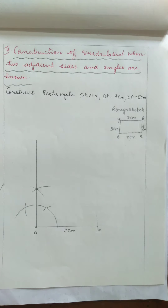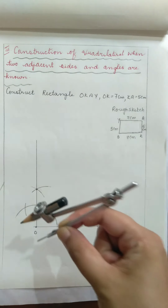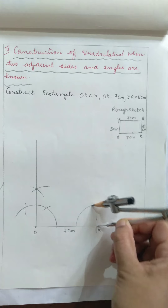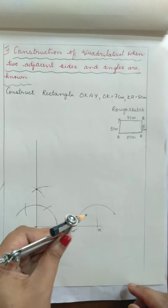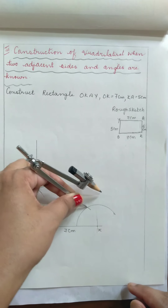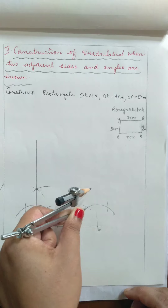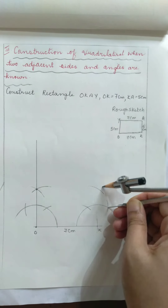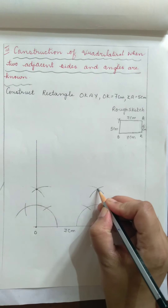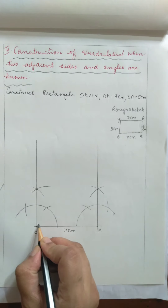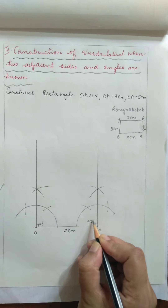Now at angle K, we also take 90 degrees the same way. Don't disturb any measurement from the previous step. Keep the compass at K, draw the arc, then draw arcs sequentially on the arc, and draw the arc above. Keep the compass and draw one more arc. Mark the point and draw a straight line from K. When you measure the angles at O and K, both will be equal to 90 degrees.